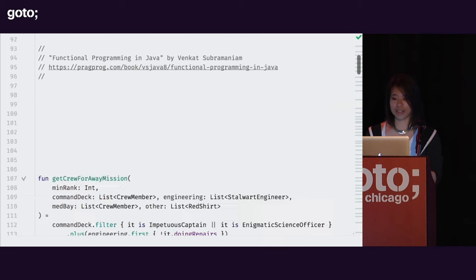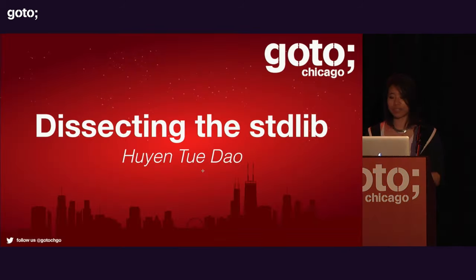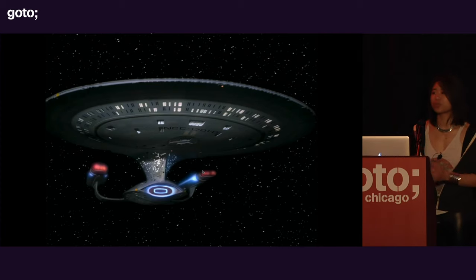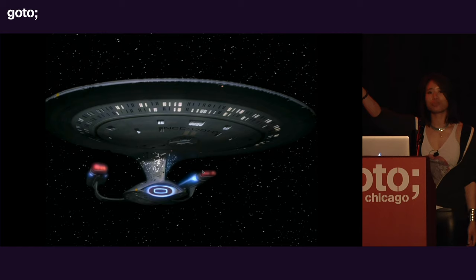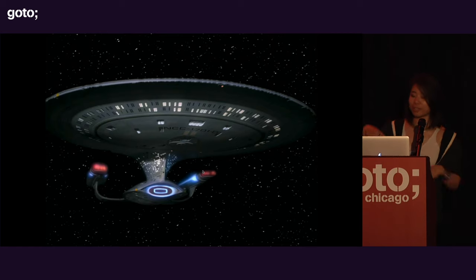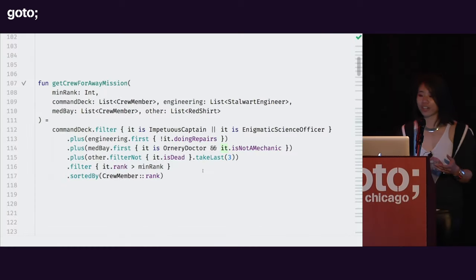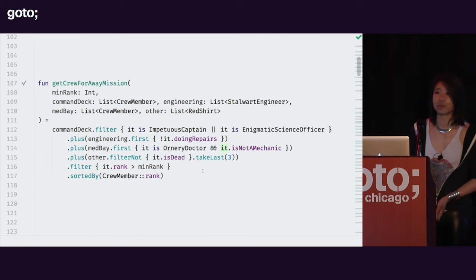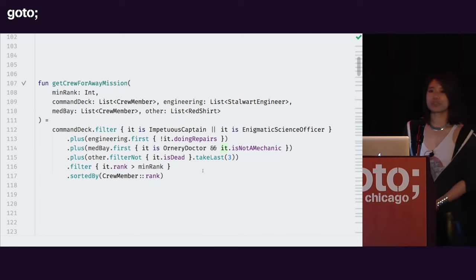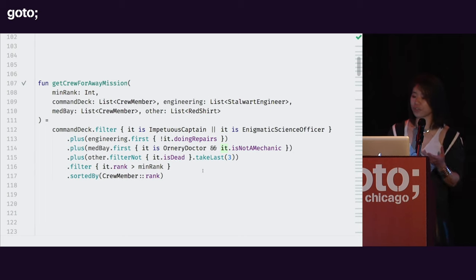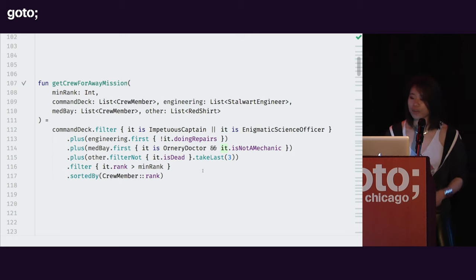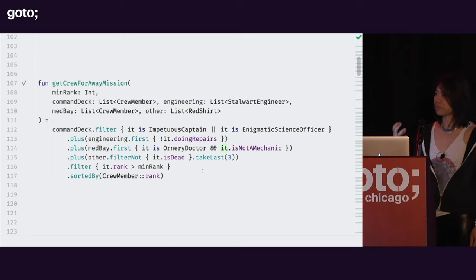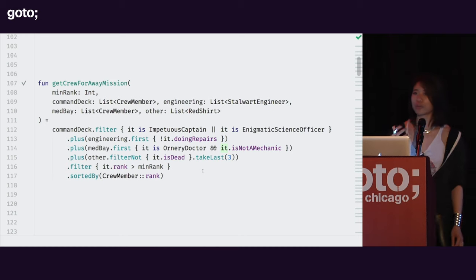Say I'm on a voyage of discovery — an intrepid crew of scientists and adventurers and some possibly crazy captain off to boldly explore new life and new civilizations. Occasionally on this mission I have to take away missions to a planet — maybe picking up resources, maybe rescuing someone. Away missions can be complicated and dangerous, so we need the right group of people. How do I find this group of crew members able to go on this away mission?